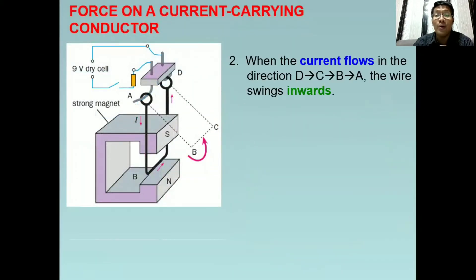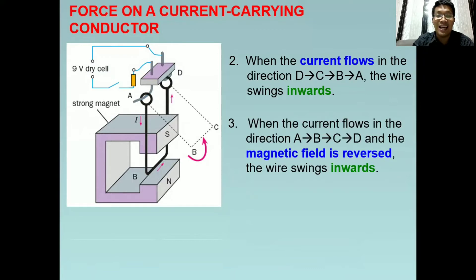But what if we change the flow of current? So instead, it flows from D, C, B to A. So ginawa nating opposite. This time, what will happen is that the wire will swing inward. E paano naman kung katulad nung unang instance na ang movement ng current ay from A to D, pero babalikta rin naman natin ang magnetic field ng strong magnet. So ibig sabihin, ang south ay mapupunta sa baba at ang north ay mapupunta sa taas. So ang result ay magmumove pa rin ng inward ang wire.